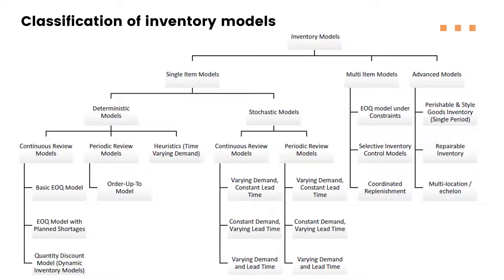Welcome. In this video lecture, I am going to talk about the basic EOQ model — the economic order quantity model. The economic order quantity model comes under the continuous review models. The continuous review model addresses the 'when to order' perspective: when the inventory level of a certain product reaches a certain level, then how much quantity we should order.